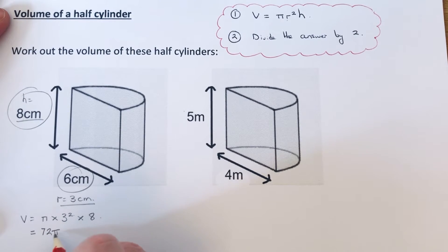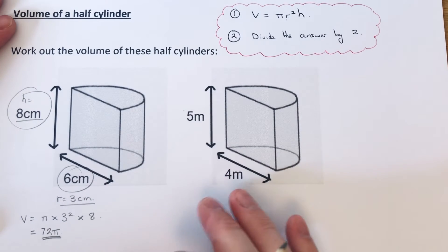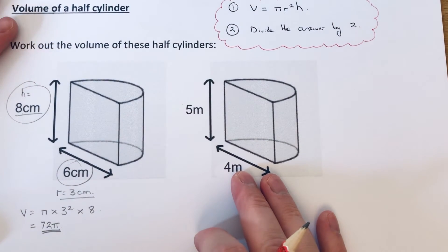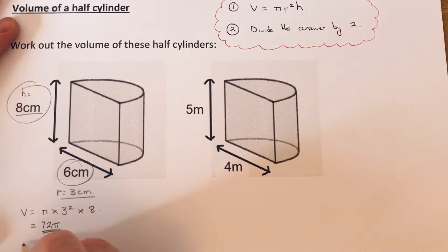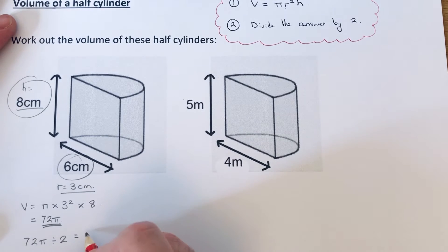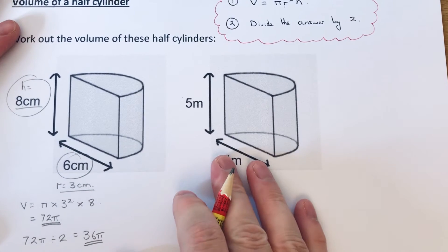That is the volume of the full cylinder. To get the volume of the half cylinder, we now need to divide that by 2. So our final answer will be 72π ÷ 2. Half of 72 is 36, so our final answer will be 36π cm³.